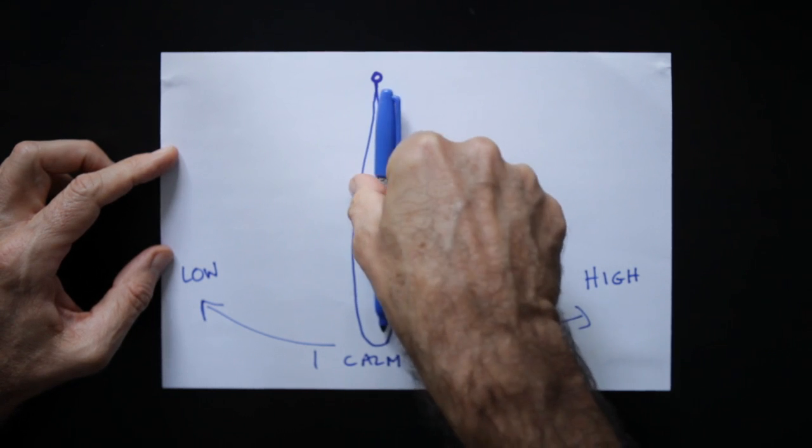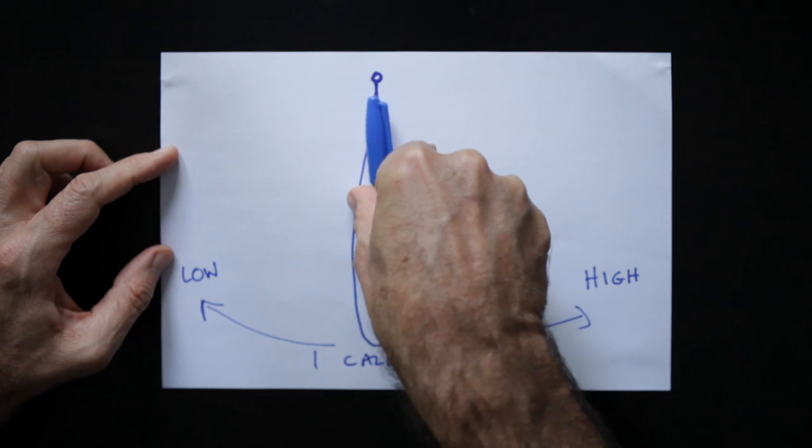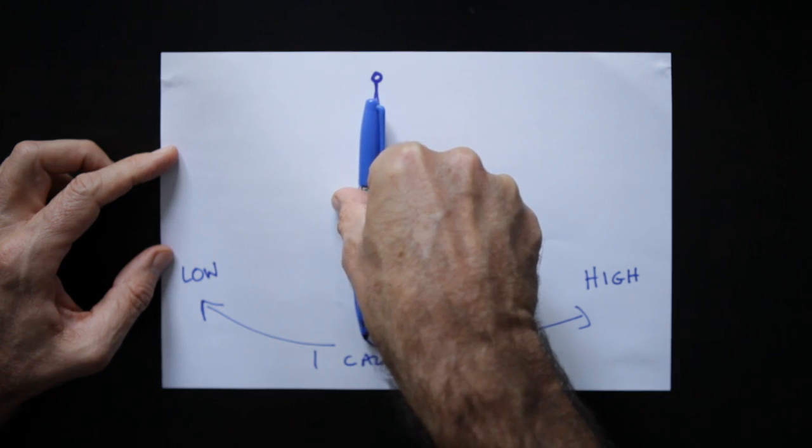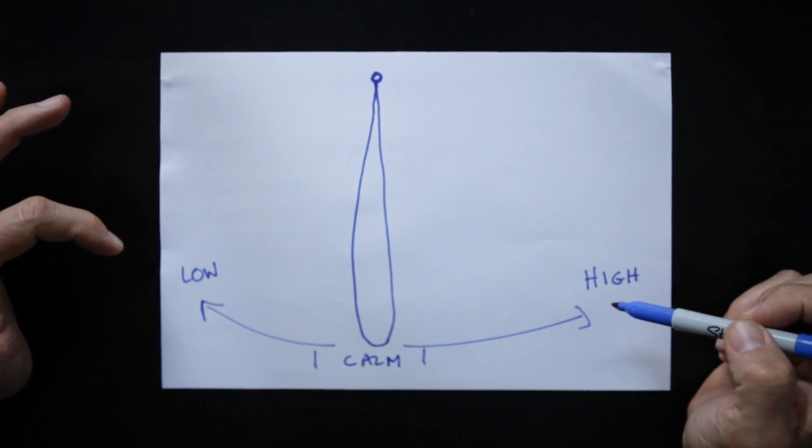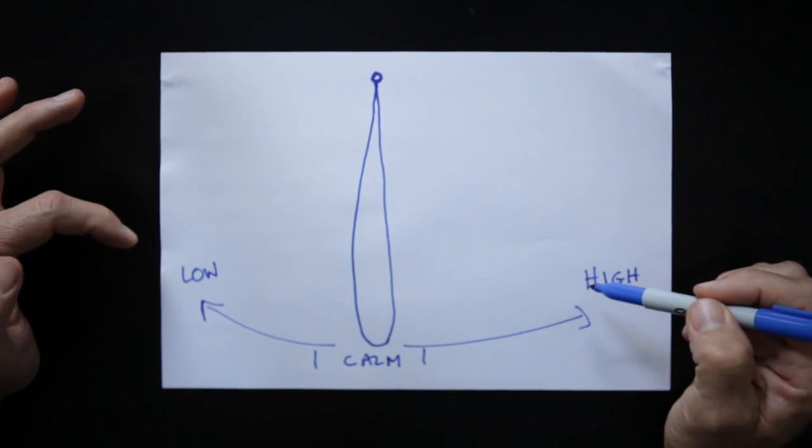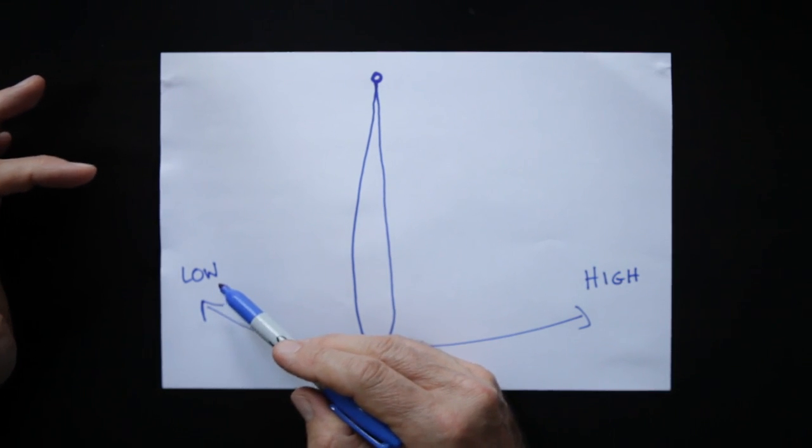The gentle swinging of the pendulum in the center, a calm place that is balanced. But equally, we can swing to the high and swing to the low. Now there's no judgment in the high or the low. It's very exciting to be in the high. It's also very inspirational and engaging to be in the low.